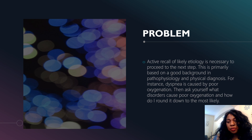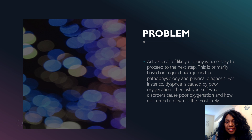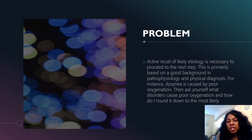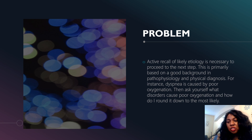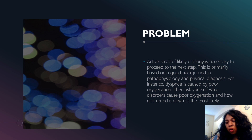Active recall is essentially critical thinking. Active recall of likely etiology is necessary to proceed to the next step. This is primarily based on a good background in pathophysiology and physical diagnosis. For instance, dyspnea is caused by poor oxygenation. So then you ask yourself: what disorders cause poor oxygenation, and how do I narrow it down to the most likely culprit?